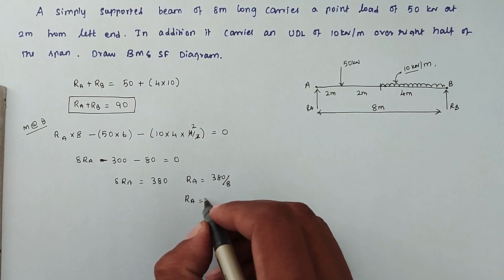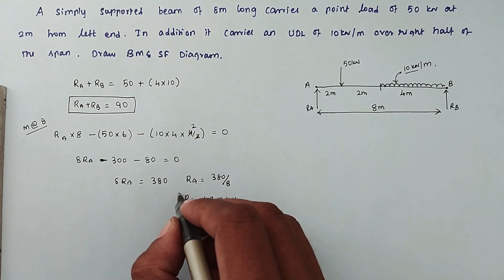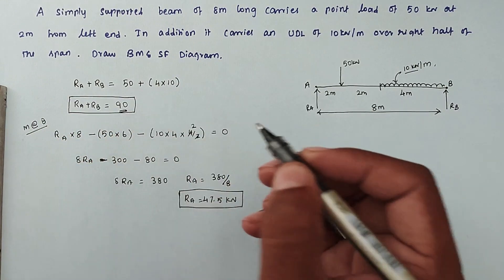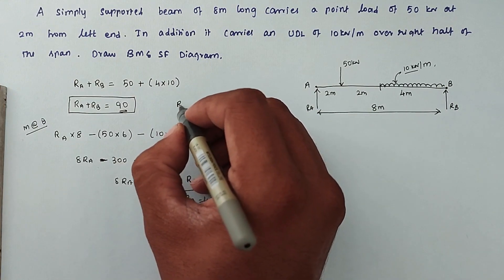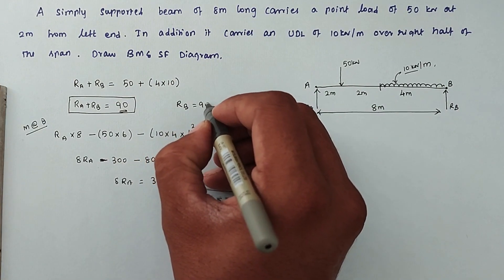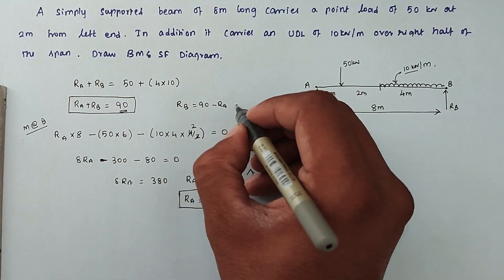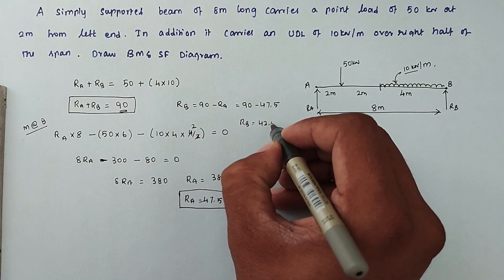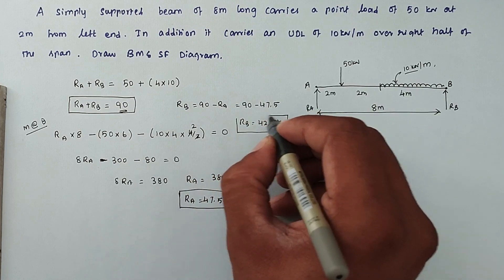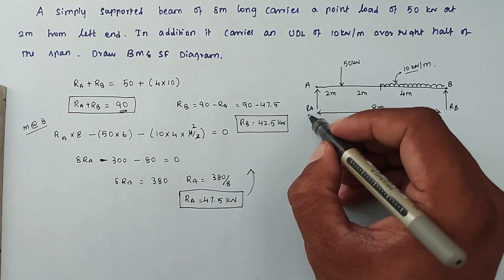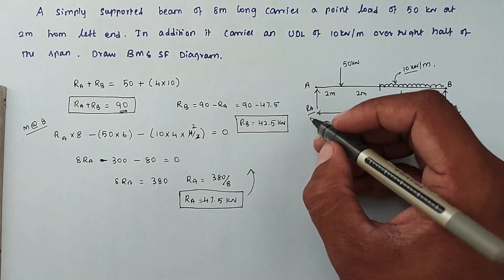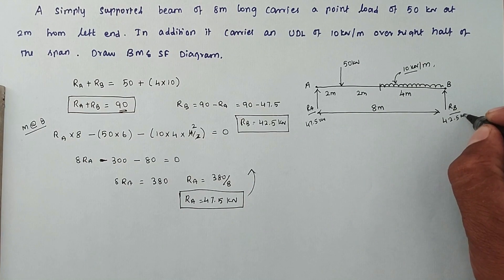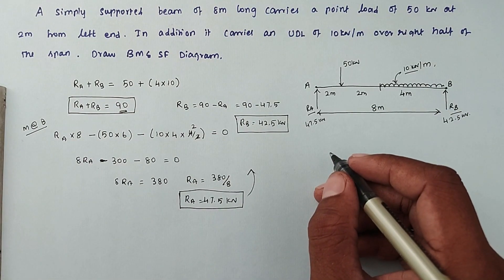Solving, RA equals 380 divided by 8, so RA equals 47.5 kN. Therefore RB equals 90 minus 47.5, which gives RB equal to 42.5 kN. We have now found both reactions: RA = 47.5 kN and RB = 42.5 kN.